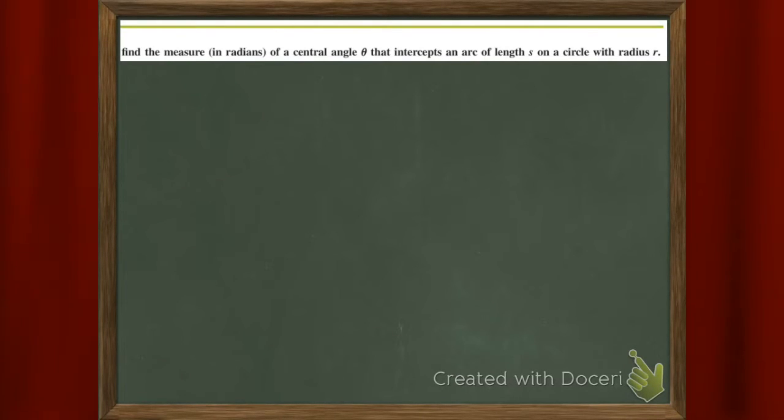Oh boy! So what do they do? They want you to find the measure in radians of a central angle theta that intercepts an arc of length s in a circle with radius r. What?